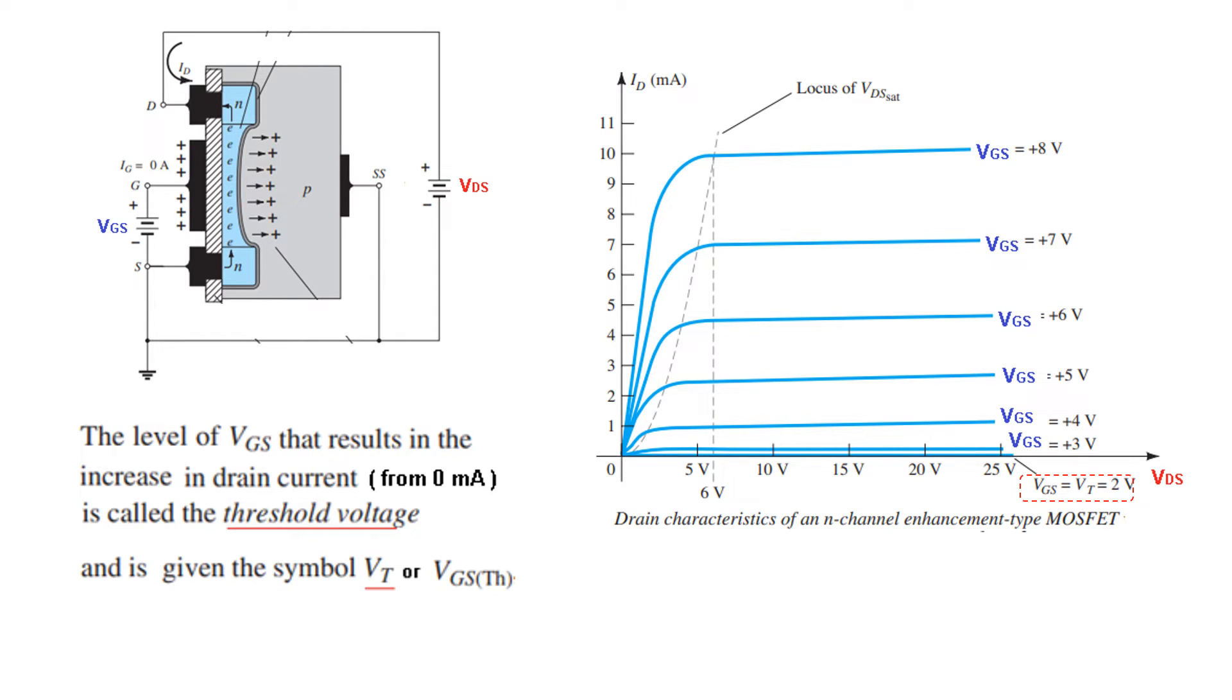Now if you see the characteristics curve, the drain characteristics curve, a couple of things we have to note. The level of VGS, the gate voltage that we are applying here. The level of VGS that results in an increase in drain current from 0 mA is called the threshold voltage. So the moment we are increasing the voltage level and the moment current starts flowing, that is known as the threshold voltage VGS(th).